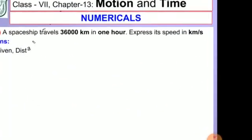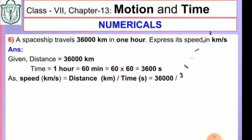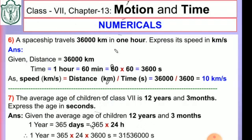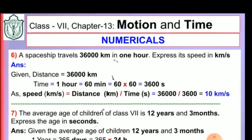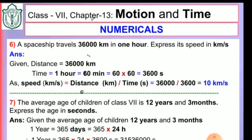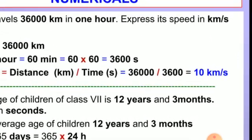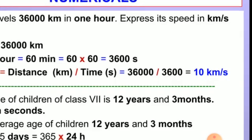A spaceship travels 36,000 km in 1 hour. Express the speed in km per second. Distance is 36,000 km. Time: 1 hour equals 60 minutes equals 60 into 60 equals 3600 seconds. Speed equals distance by time: 36,000 by 3600 equals 10 km per second.